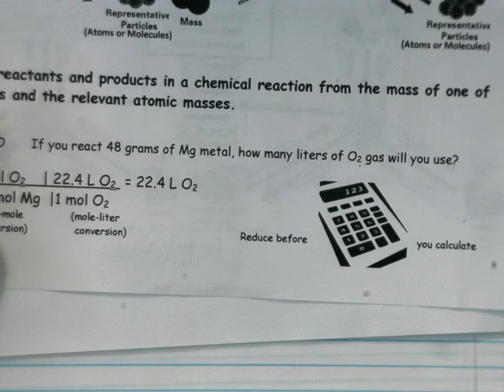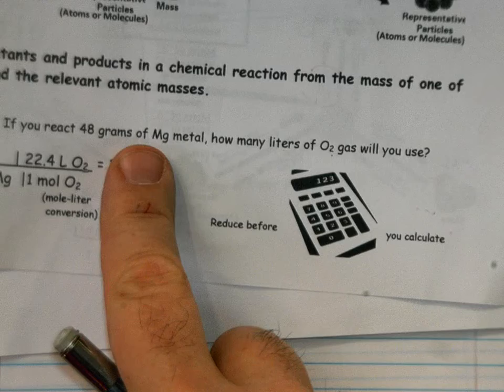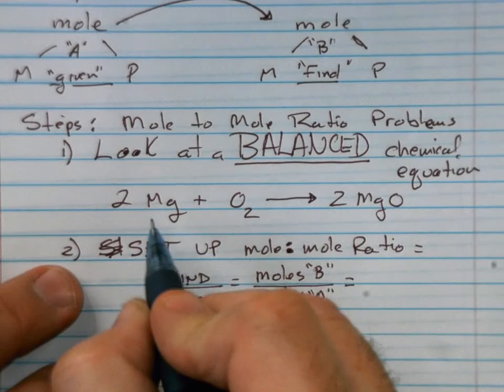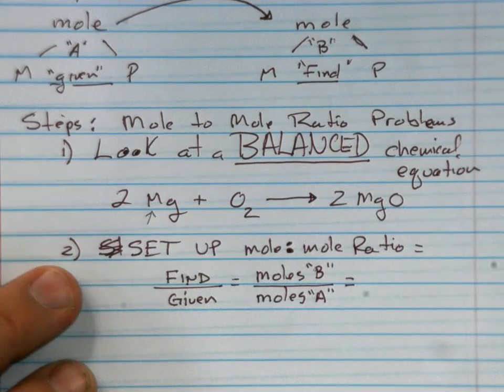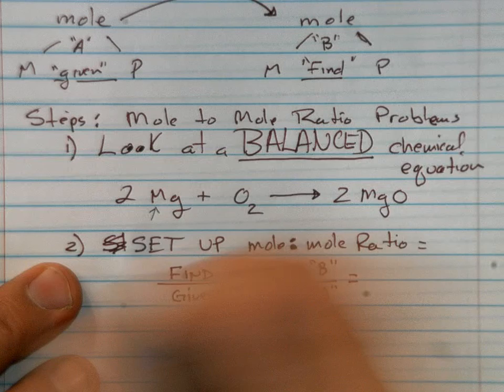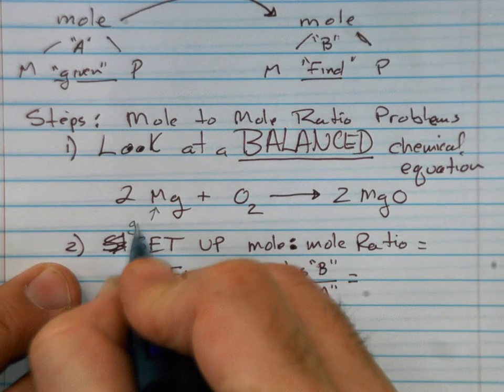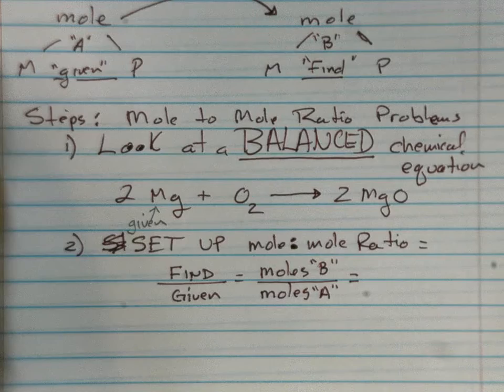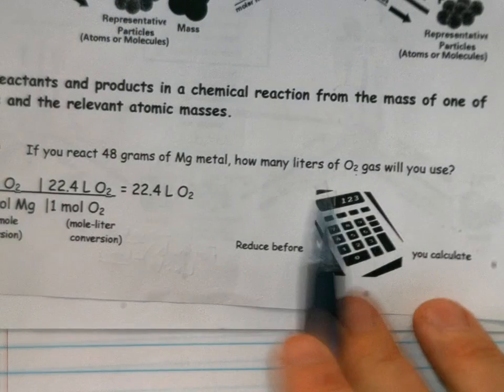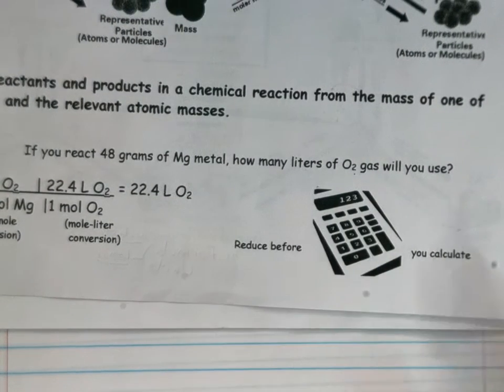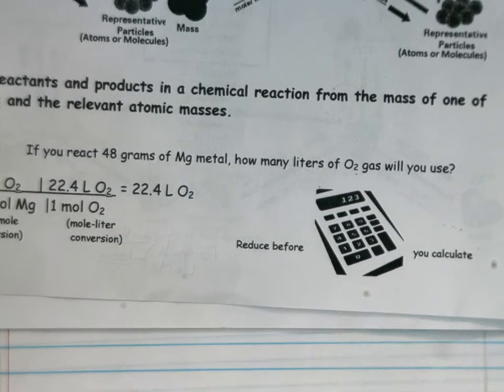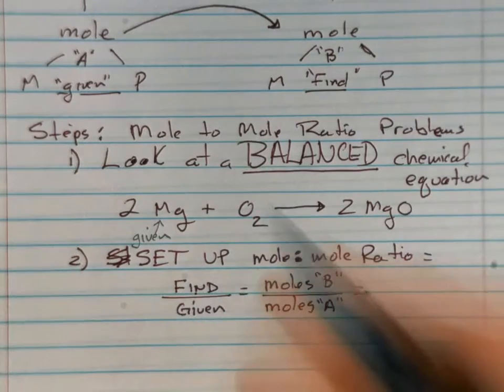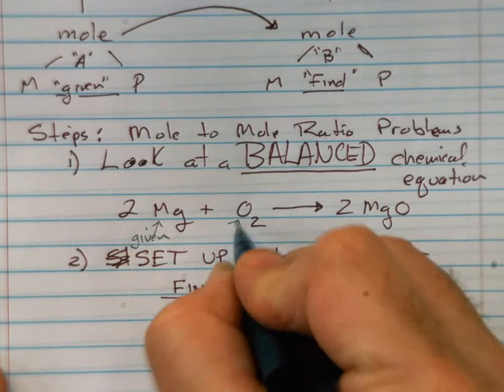Over here, we're going to label that magnesium for this particular problem is the given. We're given grams of magnesium. And then what are we trying to find in that problem? Liters of O2. So we're trying to find oxygen, so I'm going to label this one as the find.